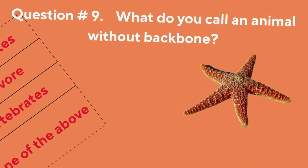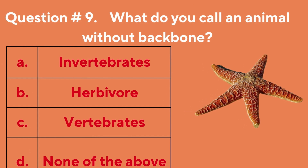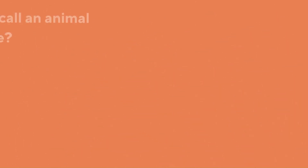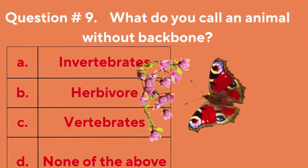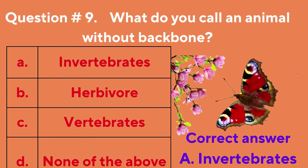Question number nine: what do you call an animal without a backbone? A. Invertebrates, B. Herbivore, C. Vertebrates, D. None of the above. The correct answer is A. Invertebrates.